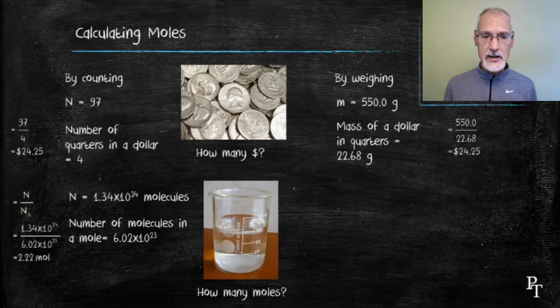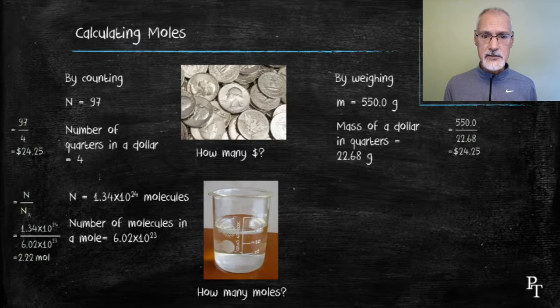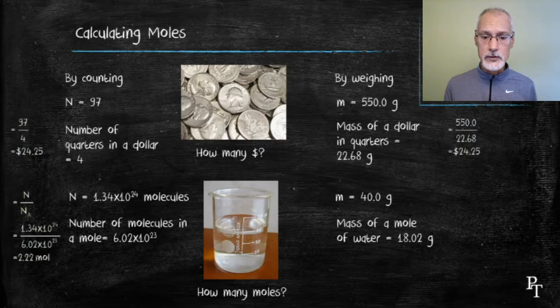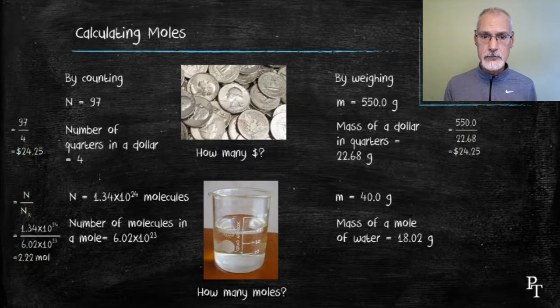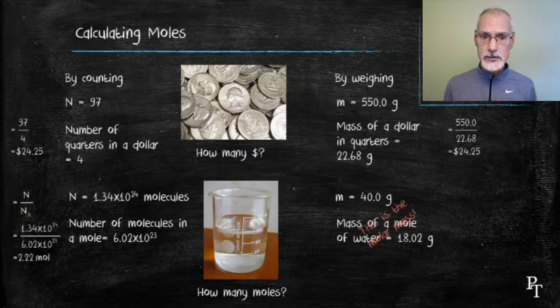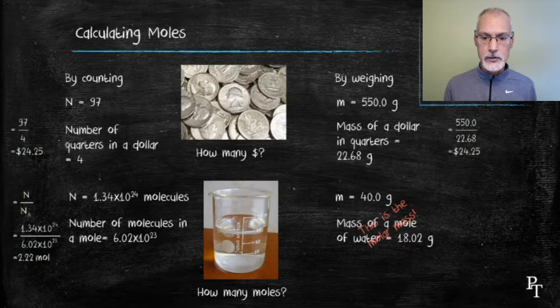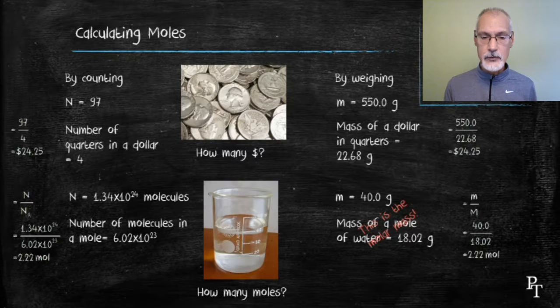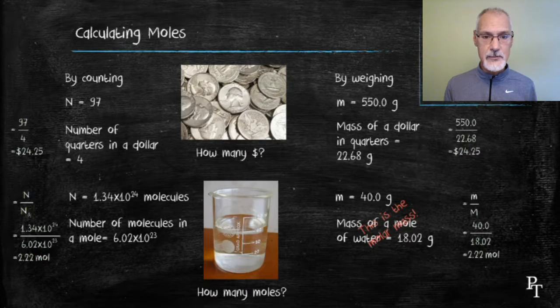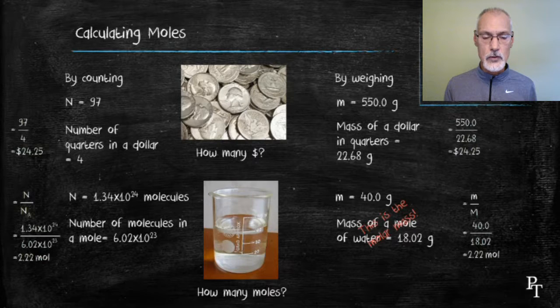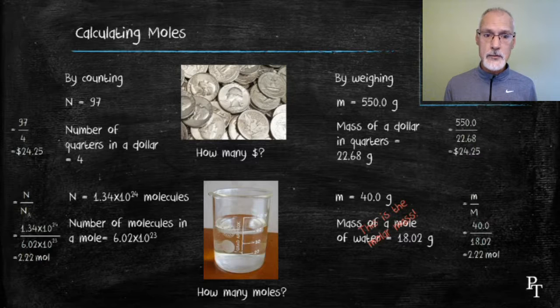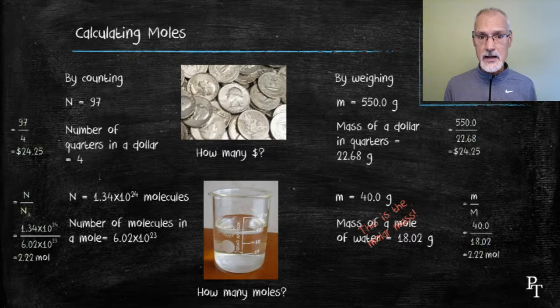I could also obtain it by weighing. I determine the mass of water. 40 grams. And the mass of 1 mole of water is 18.02 grams. Remember, that's the molar mass. The mass of 1 mole. I can then take the 40 and divide it by the molar mass. 18.02. And I arrive at the same answer. 2.22 moles. So I was able to obtain the number of moles, both through the number of particles and the mass.